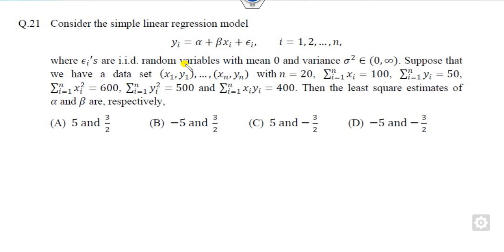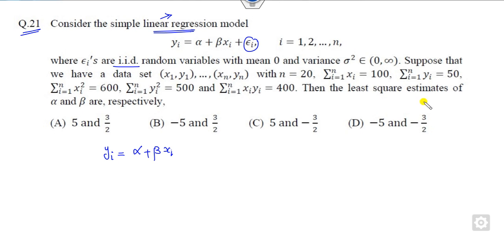Now, what is the concept behind question 21? This is a simple regression line where yi = α + β·xi, and this is the IID random error term. You have to find the values of alpha and beta. This is a very simple question — you can use the method of least squares. Once you apply the method of least squares, you have to derive the normal equations.